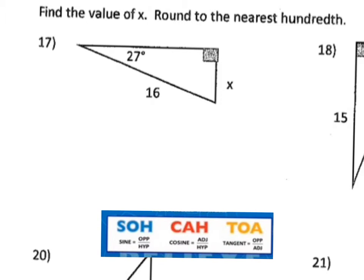Question 17 asks you to find the missing value of X, which happens to be a side length. Notice we only have one of the side lengths, so therefore we can't do the Pythagorean theorem. We're going to have to use SOHCAHTOA.